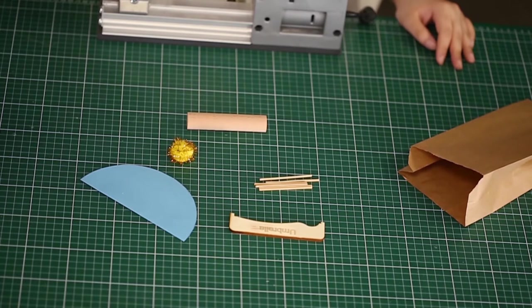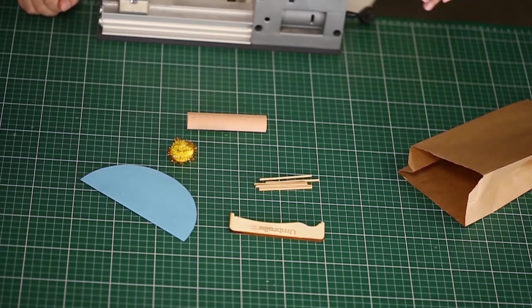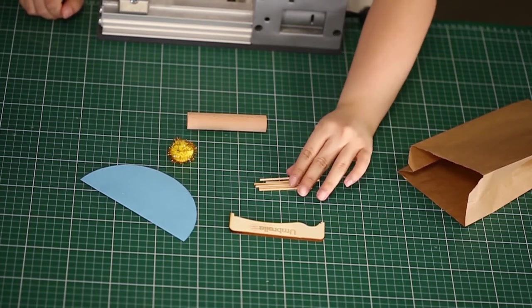For this model, we need a wooden cylinder, pom-pom, colorful cardboard, a guide, and skewers.